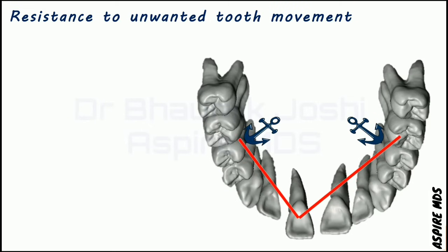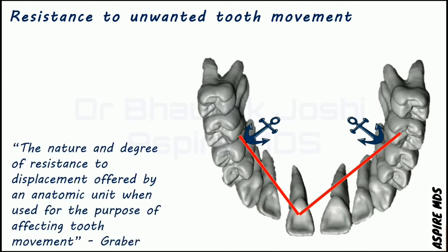So here the anchor teeth will bring the tooth back in the arch. Graeber defined anchorage as the nature and degree of resistance to displacement which is offered by the anatomical unit when it is used for the purpose of affecting tooth movement.